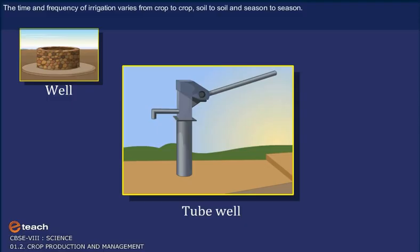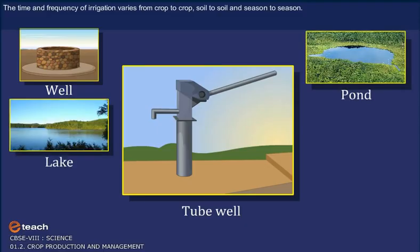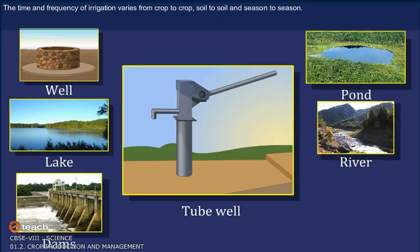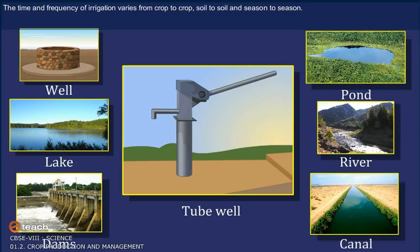The time and frequency of irrigation varies from crop to crop, soil to soil and season to season. The sources of irrigation are wells, tube wells, ponds, lakes, rivers, dams and canals.